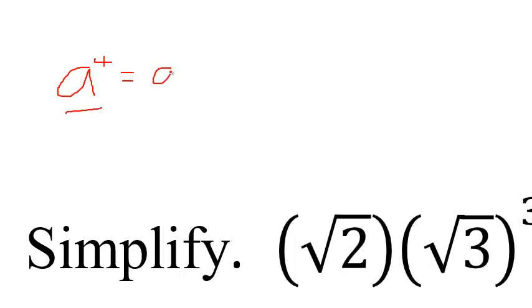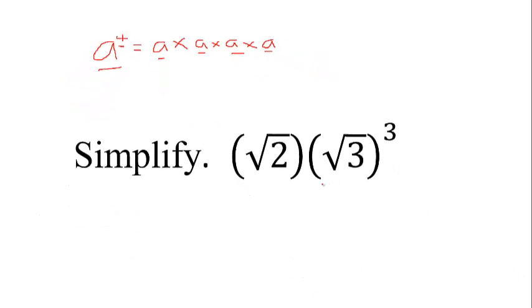This one is the same as we have. Now this one means that 3 is multiplied by itself three times, so this one is the same as...